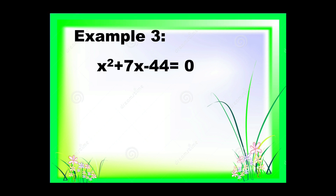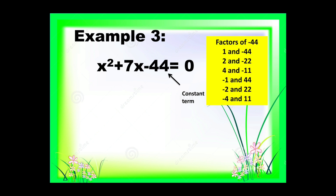Example number 3: x squared plus 7x minus 44 is equal to 0. Since the constant term is negative, we are going to think of two numbers: when you multiply the answer is negative 44, and when you subtract the answer is positive 7. The factors of negative 44 are 1 and negative 44, 2 and negative 22, 4 and negative 11, negative 1 and 44, negative 2 and 22, and negative 4 and 11. The sign of the middle term is positive, so among these factors, we have negative 4 and 11: 11 minus 4 is 7, and 11 times negative 4 is negative 44.